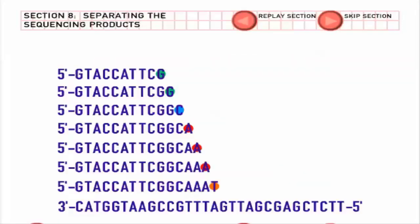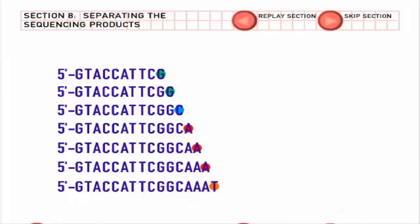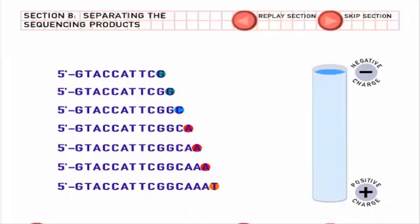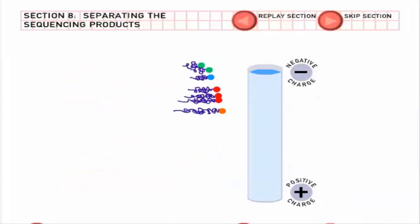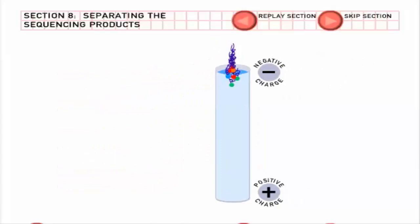The DNA molecules produced in the sequencing reaction are separated by a process called electrophoresis. DNA molecules are negatively charged. The sequencing machine sets up an electric field. All the DNA moves down through a porous gel toward the positive charge.